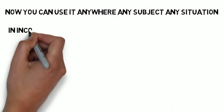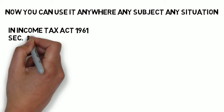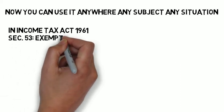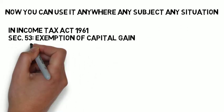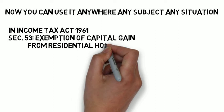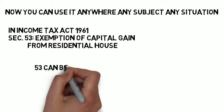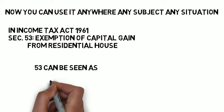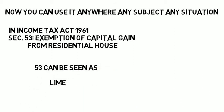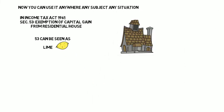For example, in the Income Tax Act 1961, Section 53 says: exemption of capital gain from residential house. Section 53 → 5 is L, 3 is M → L-M → 'lime'. So visualize: you immediately squeeze a lemon and it gets exempted — capital gain from residential house, exempted!